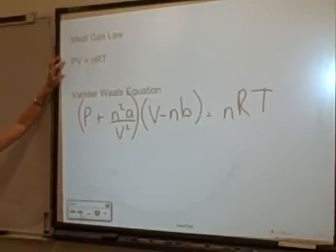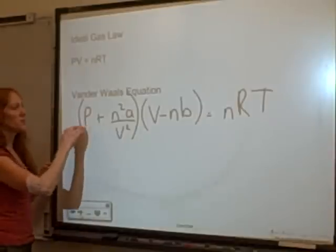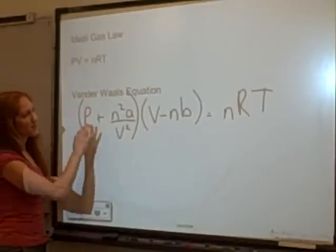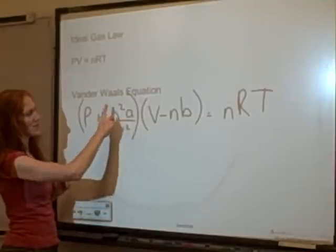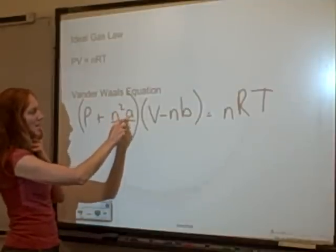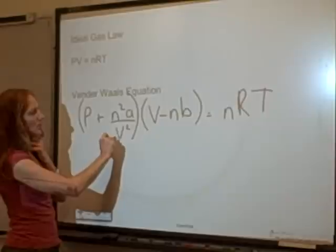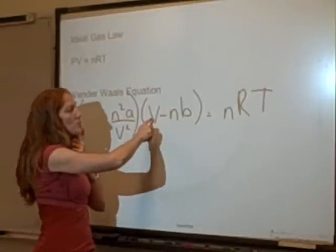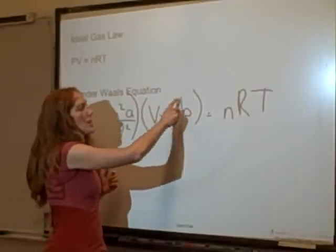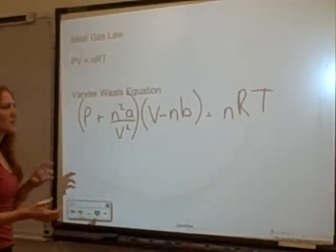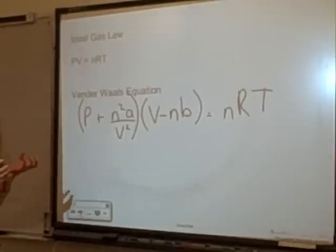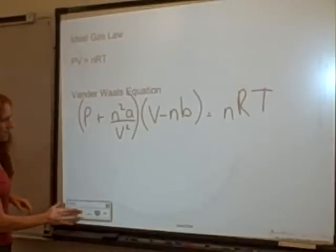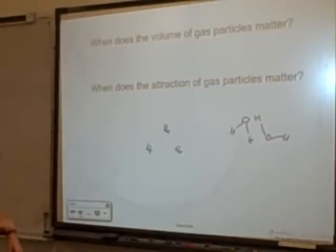The ideal gas law is simply PV = nRT. Van der Waals, on the other hand, adjusts the pressure term by factor 'a' to account for attractions between particles, and adjusts the volume term by factor 'b' to account for the actual volume of the particles. So van der Waals includes corrections for both of the assumptions the ideal gas law ignores.